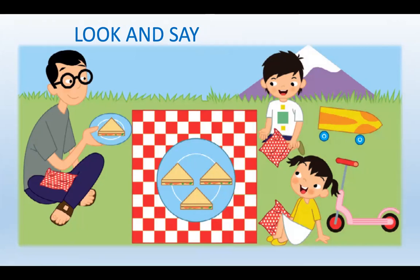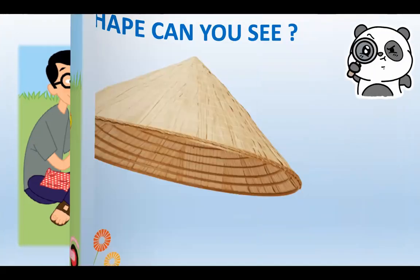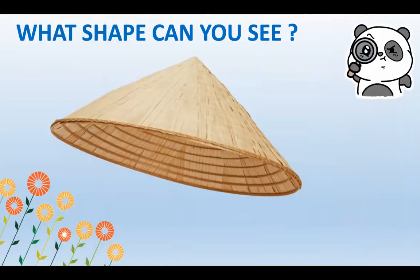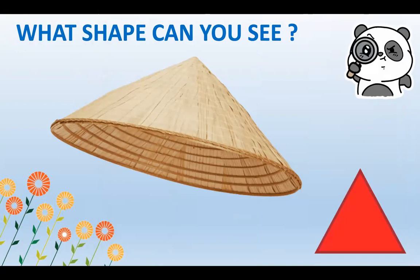Now let's find out more shapes around us. What shape can you see? Look! It's a leaf hat. What shape is it? Triangle. Triangle. Yes! Good job!